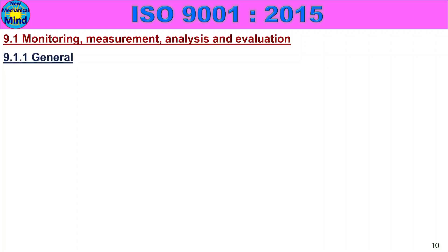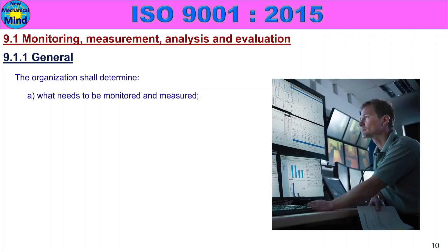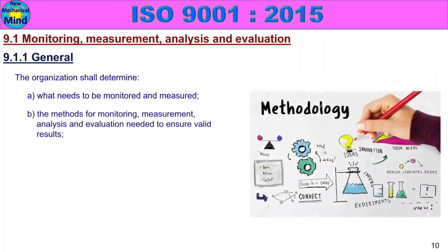First Addition Subclasses. The organization shall determine: what needs to be monitored and measured, and the methods for monitoring, measurement, analysis and evaluation needed to ensure valid results. In the method of monitoring, measurement, analysis and evaluation activity, correct results are ensured.